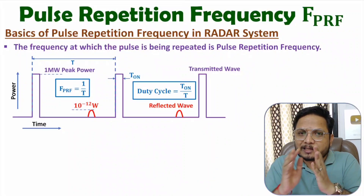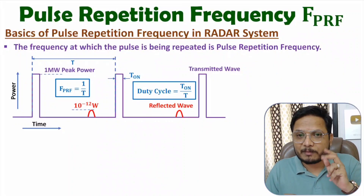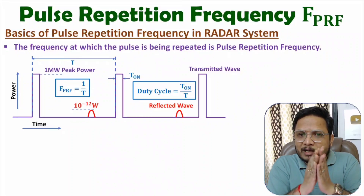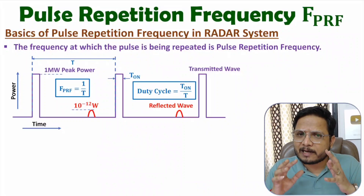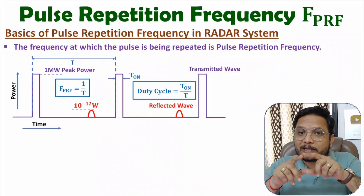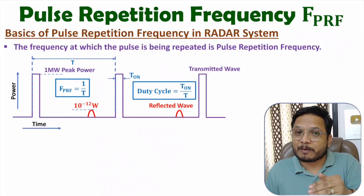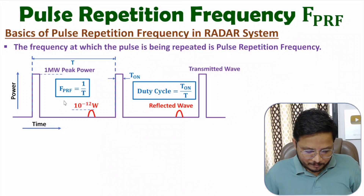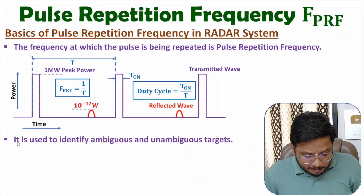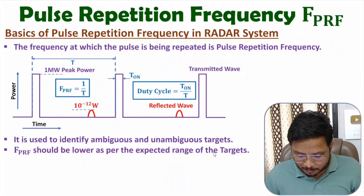If you have a larger expected range for the target, you should select a lower value of pulse repetition frequency. If targets are at shorter range, you can select a higher value of pulse repetition frequency. That decision is taken by the operator, who monitors the radar system and selects pulse repetition frequency based on expected range. Pulse repetition frequency should be lower as per the expected range of targets, and at higher values of PRF, ambiguities in target range are possible.